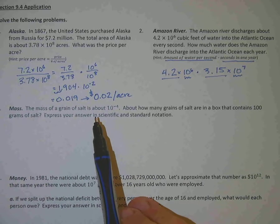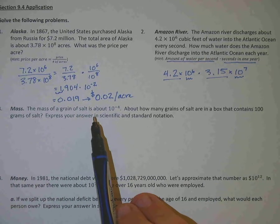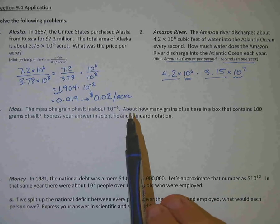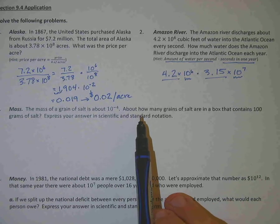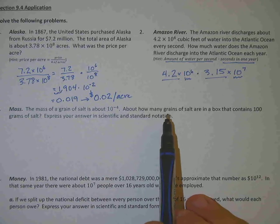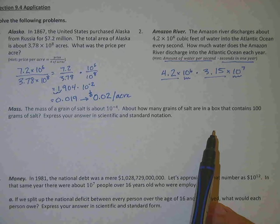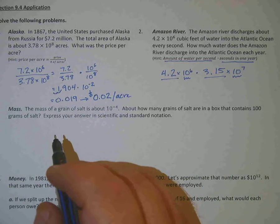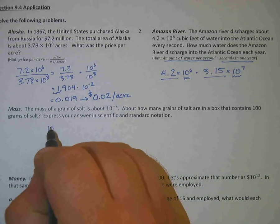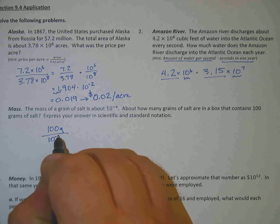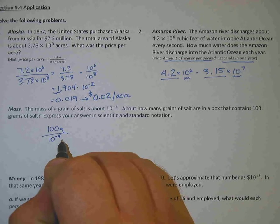The next one is about mass. So the mass of a grain of salt is about 10 to the negative 4. And those would be grams. How many grains of salt are in a box that contains 100 grams of salt? So what you're going to want to do there is go your 100 grams divided by the 10 to the negative 4th.